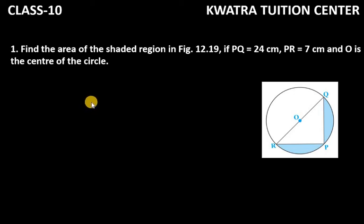Hello everyone, let's start with question number one of exercise 12.3. Find the area of the shaded region in figure 12.19 if PQ is equal to 24 centimeter, PR is 7 centimeter, and O is the center of the circle.